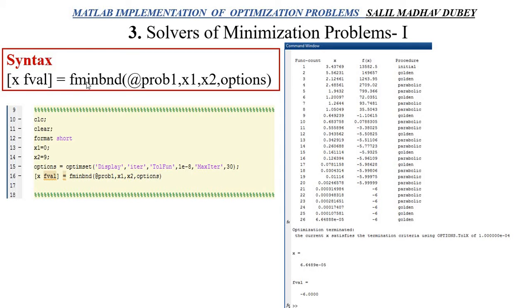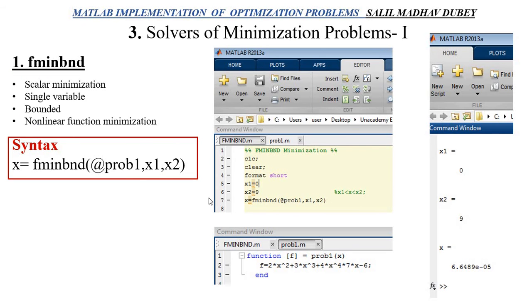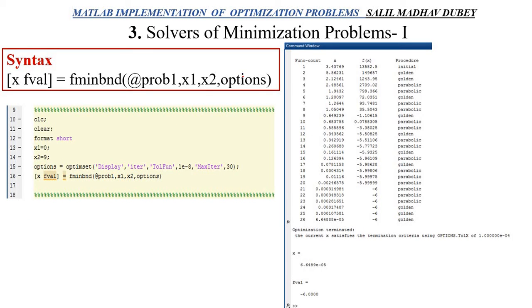If I want f value as well, there is a different syntax which we will study in the next slide. Square bracket x fval equals fminbnd, then at the rate prob1 x1, x2, options. But suppose I want to know how the x value came initially, how my program or fminbnd started. If I want to know that, then I want to add a new syntax which is options.